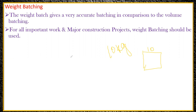But when we go for volumetric batching and want to take 10 kg of cement, what may happen is that for one guy the 10 kg may come somewhere here in the farma box — the volume may even come down. So in this way, they have different proportions. That is the reason we always go with weight batching, since 10 kg remains 10 kg only, and you get the exact measurement.